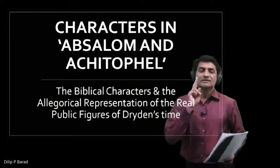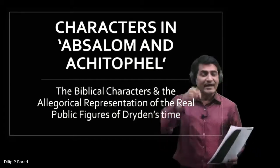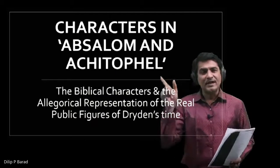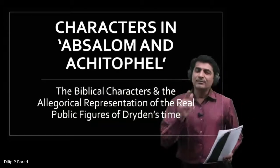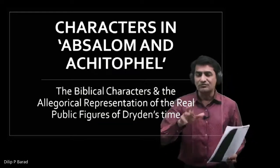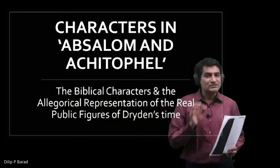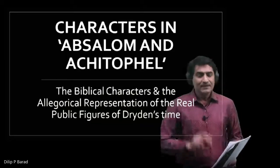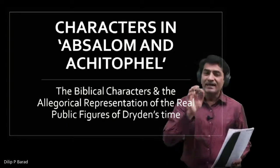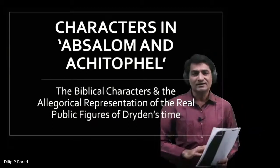The second important point: what have they done? What was their act — the biblical act of bygone days and the political act of Dryden's contemporary time, around 1678 to 1680? The third and final important point: were these characters on the side of King David or against King David? Everything will become very clear once you address these questions.